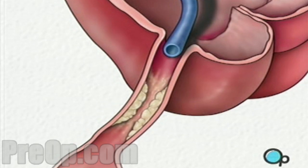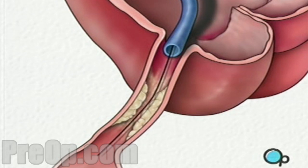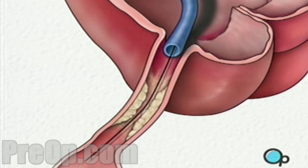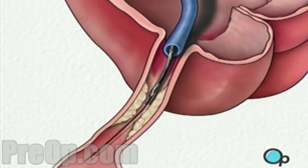Once the restricted area has been identified, a thin wire is inserted into the catheter and is guided all the way to the blocked area and then slightly beyond. This wire acts as a guide for the balloon catheter, allowing your doctor to position the deflated balloon precisely in the middle of the narrowest part of the coronary artery.